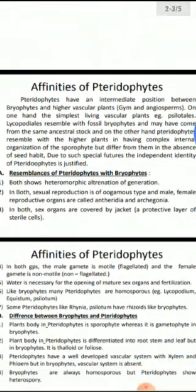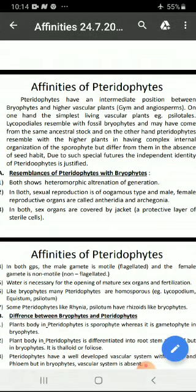Affinities of pteridophytes: Pteridophytes have an intermediate position between bryophytes and higher vascular plants, that is gymnosperms and angiosperms. On one hand, the simplest living vascular plants, e.g. Psilotales, Lycopodiales, resemble with the fossil trimerophytes and may have come from the same ancestral stock.